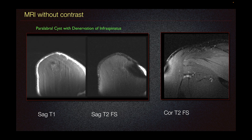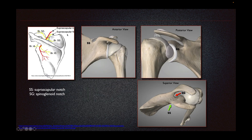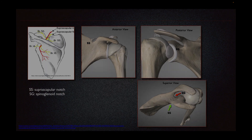Now, why do we only have it in our infraspinatus? Review of our anatomy demonstrates the suprascapular nerve passes through the suprascapular notch and then into the spinoglenoid notch. If the suprascapular nerve is affected in the suprascapular notch, then both the supraspinatus and infraspinatus are affected. If it's only affected in the spinoglenoid notch, then only the infraspinatus is affected.